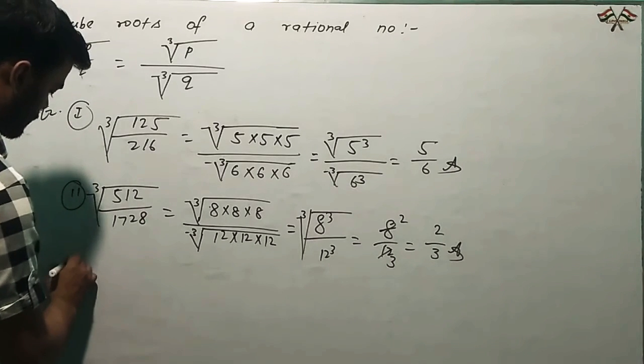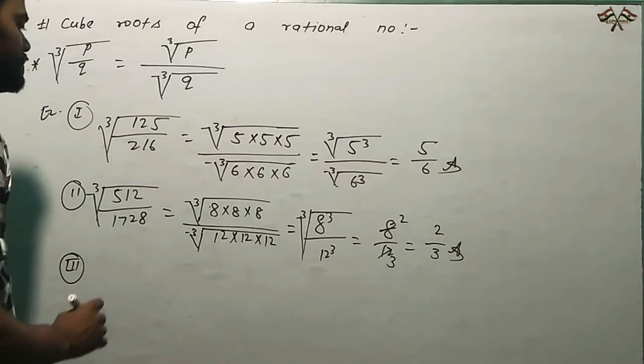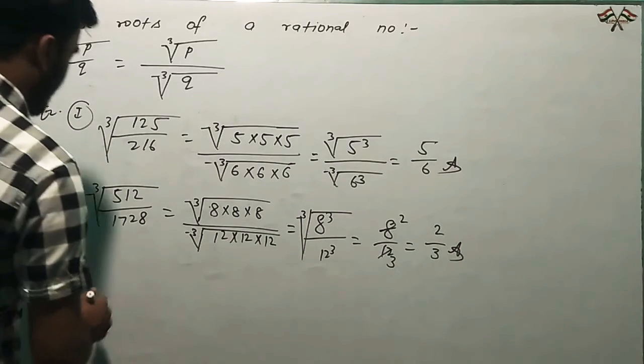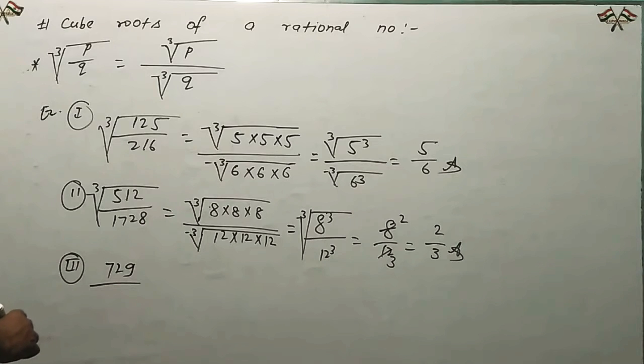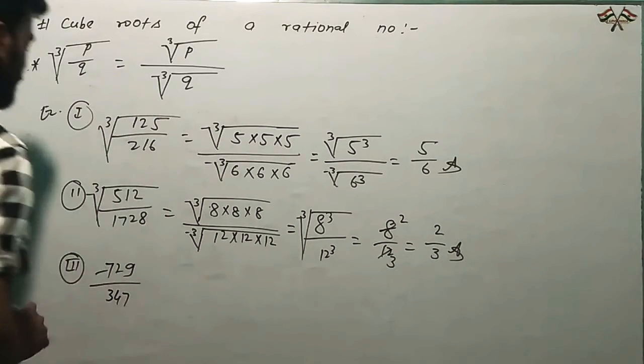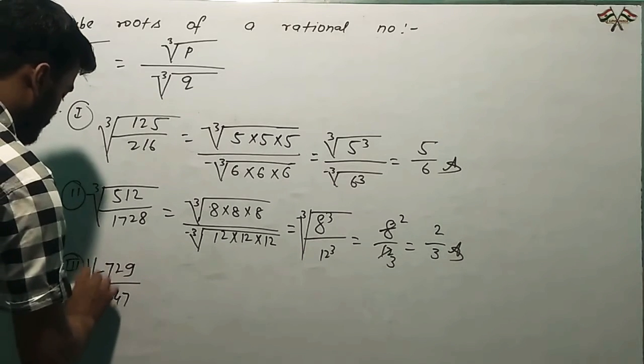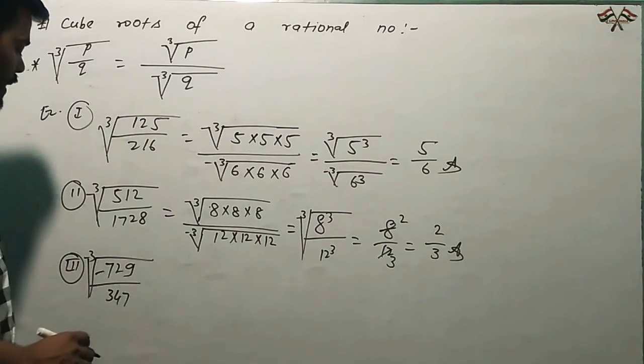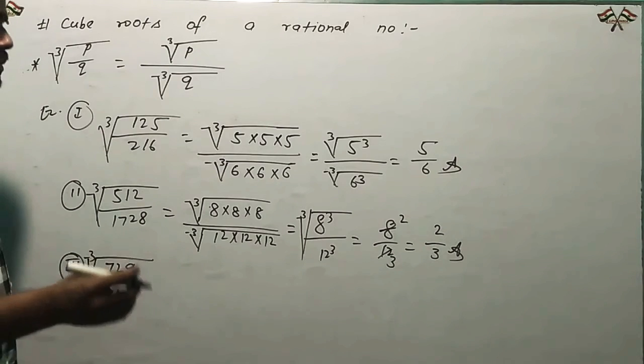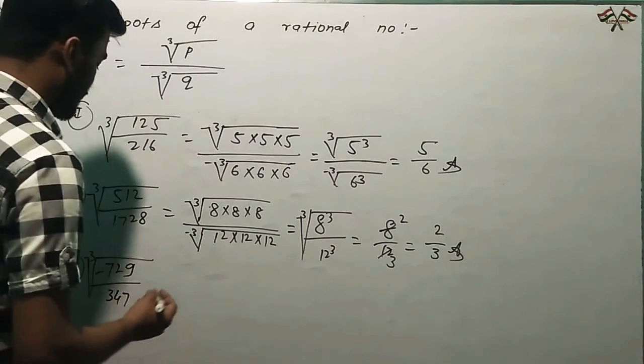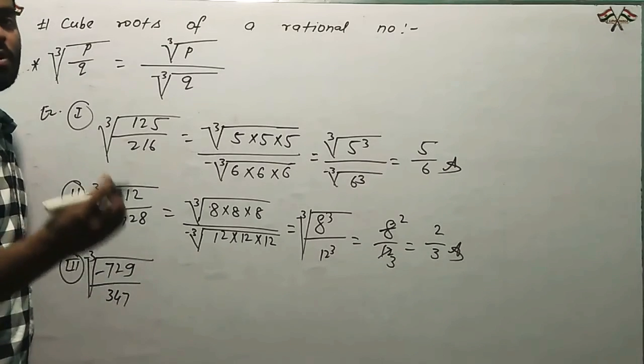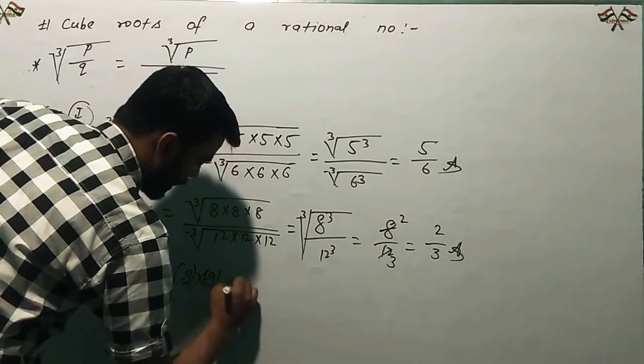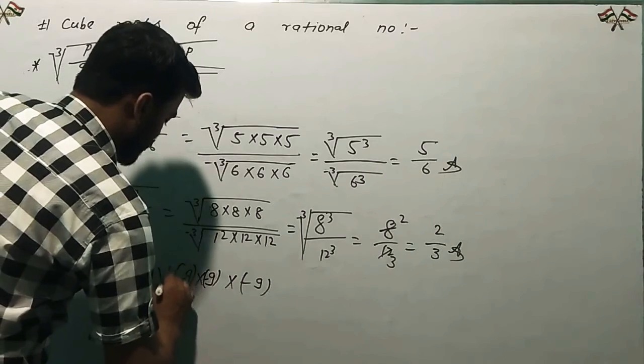And again, let's take another example. Suppose negative 729 by 343. We need to find the cube root. When there's a minus, the cube form factor includes minus. 729 is 9 cube, so we write it as minus 9 multiply minus 9 multiply minus 9 under cube root 3.